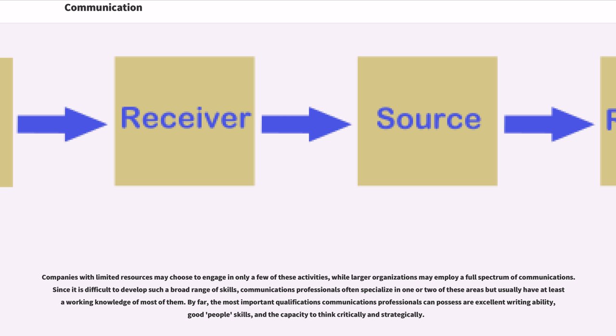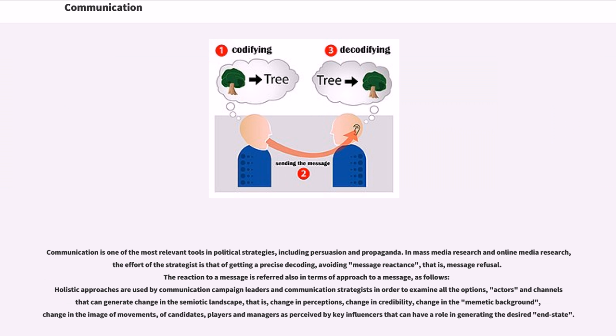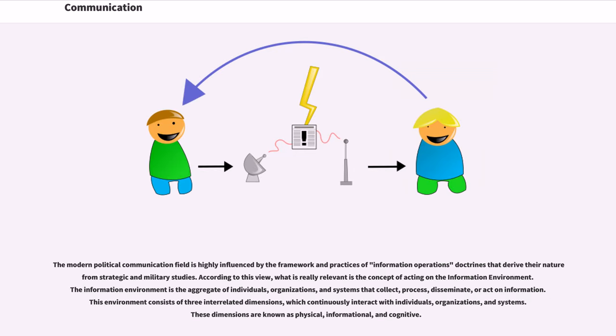Communication is one of the most relevant tools in political strategies, including persuasion and propaganda. In mass media research and online media research, the effort of the strategist is that of getting a precise decoding, avoiding message reactance, that is, message refusal. The reaction to a message is referred also in terms of approach to a message as follows: holistic approaches are used by communication campaign leaders and communication strategists in order to examine all the options, actors, and channels that can generate change in the semiotic landscape—that is, change in perceptions, change in credibility, change in the memetic background, change in the image of movements, of candidates, players, and managers as perceived by key influencers that can have a role in generating the desired end state.